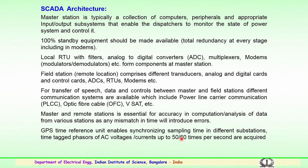The field station or remote location where sensors are employed comprises different transducers — analog and digital cards, control cards, analog to digital converters, remote terminal or telemetry units, and modems. In case of transfer of speech, data, and controls between the master and the field station, different communication systems are available: power line carrier communication, optical fiber communication, satellite communication, etc. The master and remote stations must be synchronized for accuracy in analysis of data — any mismatch in time will introduce errors. There is also a global positioning system time reference which enables synchronizing the sample time in different substations.